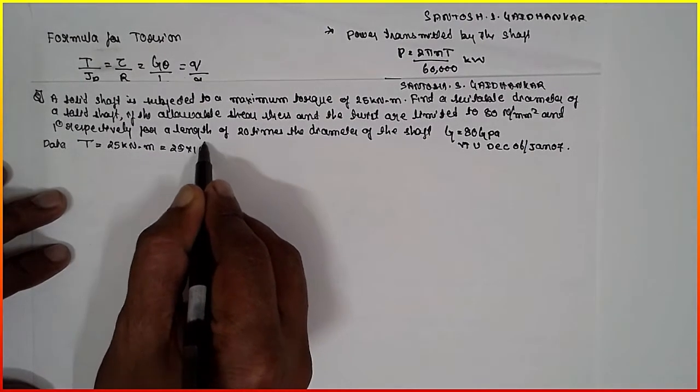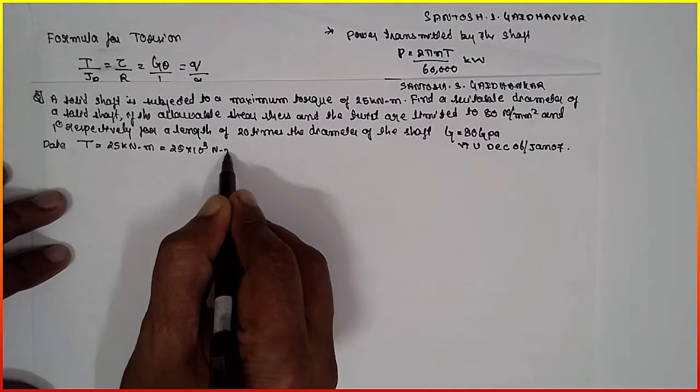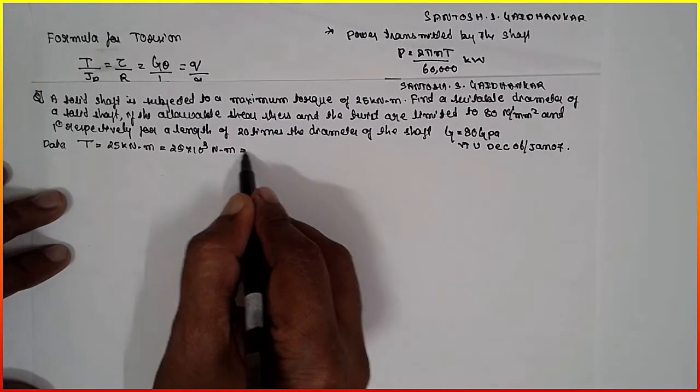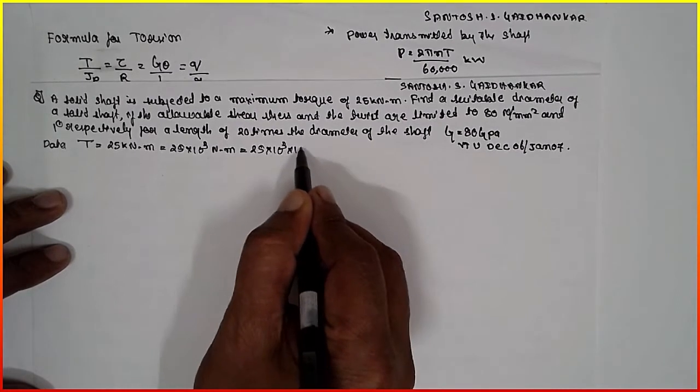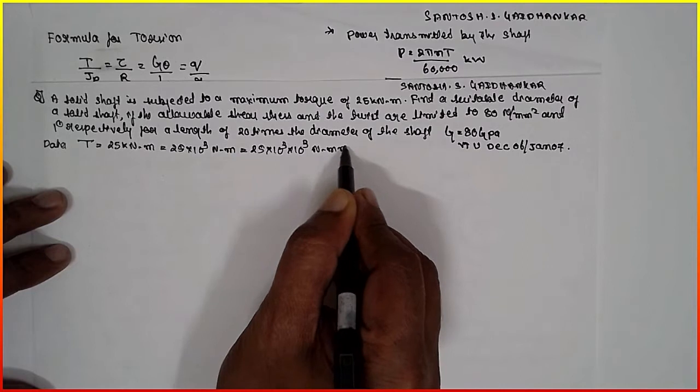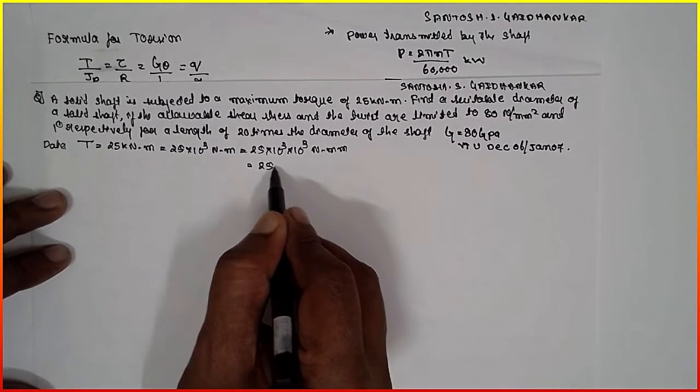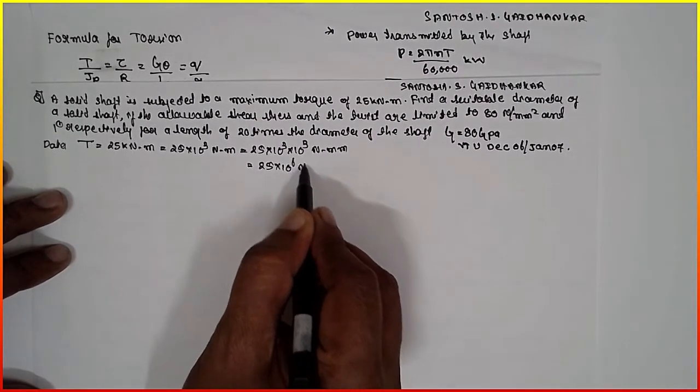Now it has to be converted in terms of Newton meters. 25 into 10 raised to 3 becomes 25,000. Further, 25 into 10 raised to 3 into 10 raised to 3 becomes 25 into 10 raised to 6 Nm.